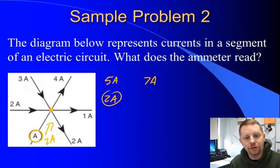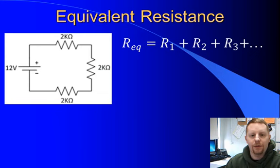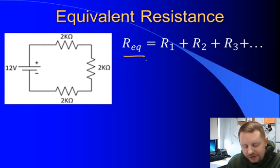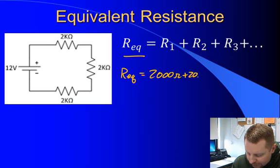We can also look at equivalent resistance. When you have a number of resistors in series, you can ask: what single resistor could I replace them with that would give equivalent performance? If I have a 2 kilohm resistor, along with another 2 kilohm resistor, and a third 2 kilohm resistor, in a series circuit the equivalent resistance R_eq equals the sum of the resistors: R1 + R2 + R3. So R_eq equals 2,000 + 2,000 + 2,000, or 6,000 ohms.